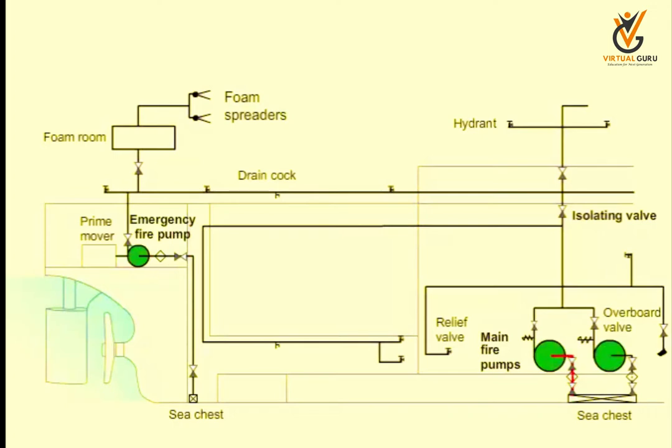The fire pump draws water through the strainer from the main sea-suction line. One discharge of the pump is connected directly to the overboard valve to regulate pressure, and the other supplies water to all engine room hydrants and deck services.